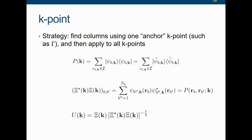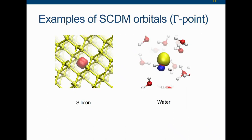You might wonder whether this always works. Although there is no direct proof, our experience so far is: for insulating systems, if the system is topologically trivial, it really doesn't matter which point you choose. But if it is topologically non-trivial, this won't work. In practice, it becomes actually easy. Here are some examples of the SCDM orbitals obtained from Quantum Espresso for a gamma-point calculation. You can see the shape of the SP-hybridized orbitals located on the bond, and localized orbitals localizing on the oxygen — pretty much agrees with chemical intuition.